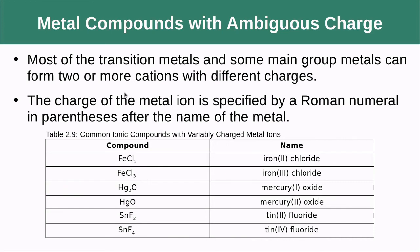Most transition metals and some main group metals can form two or more cations with different charges. The charge of the metal ion is specified by Roman numerals. For example, because iron can be +2 or +3, we specify: iron(II) chloride has a +2 charge and iron(III) chloride has a +3 charge.